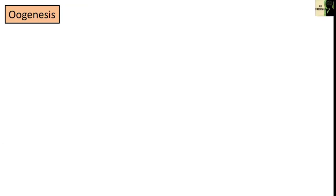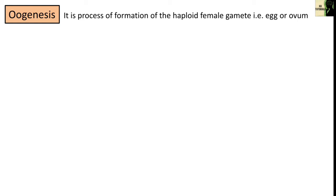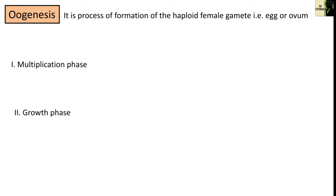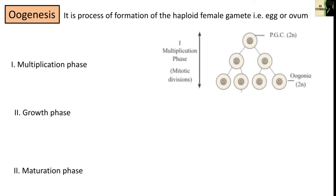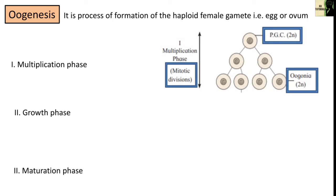Let's talk about oogenesis. It is the process of formation of haploid female gametes, i.e., egg or ovum, from the diploid germinal epithelium. It involves the process of meiosis. Like spermatogenesis, oogenesis can be divided into three phases: multiplication phase, growth phase, and maturation phase. In the multiplication phase, the primary germinal cells of the ovaries undergo repeated mitotic divisions to form millions of gamete mother cells or oogonial cells. This process is completed in the embryonic stage of human females.